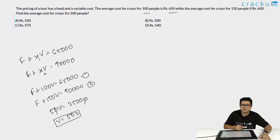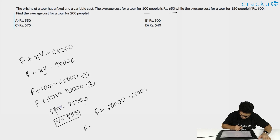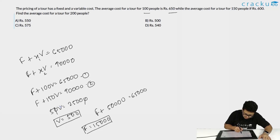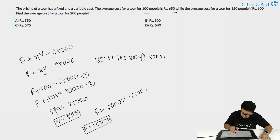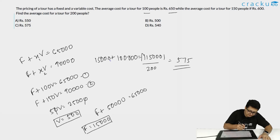Now that we know v = 500, we can find f by substituting into equation 1: f + 500×100 = 65,000, so f = 15,000. For 200 people, total cost = 15,000 + 500×200 = 1,15,000. Averaging by 200 gives 575 rupees. The answer is C.